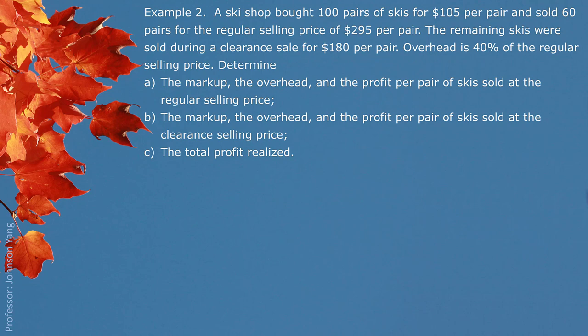Example 2: A ski shop bought 100 pairs of skis for $105 per pair and sold 60 pairs for the regular selling price of $295 per pair. The remaining skis were sold during the clearance sale for $180 per pair. Overhead is 40% of the regular selling price.